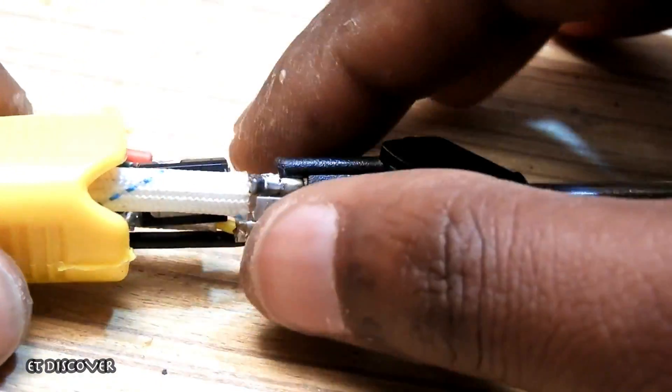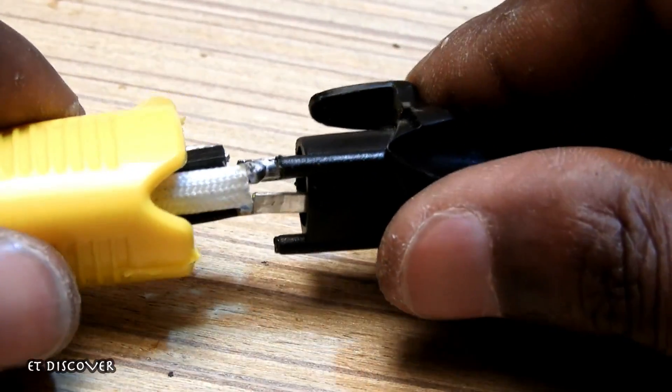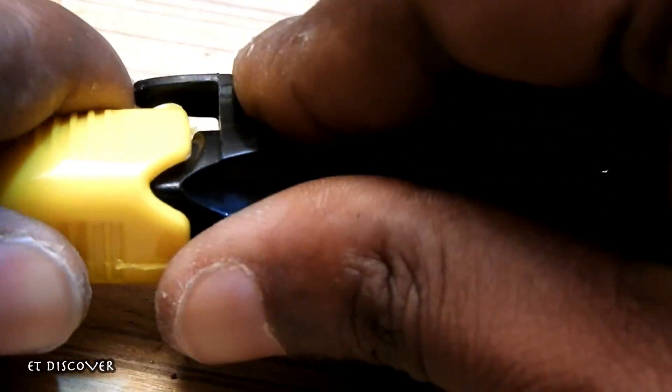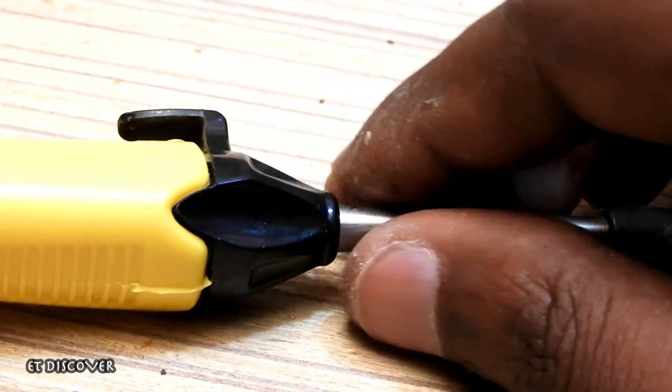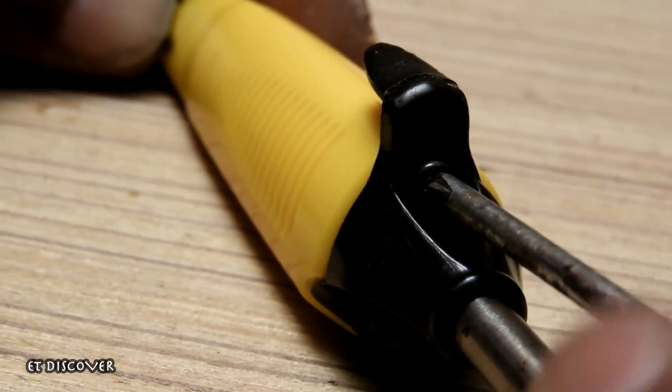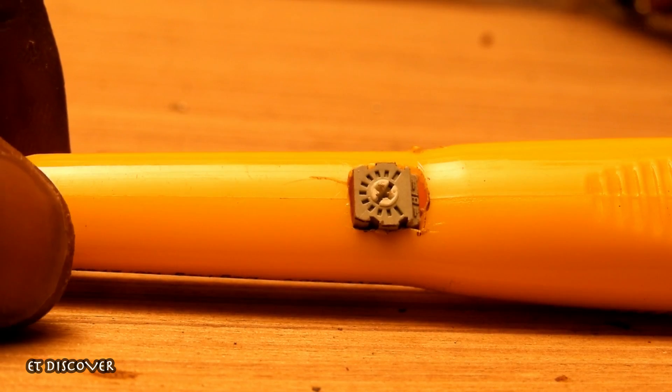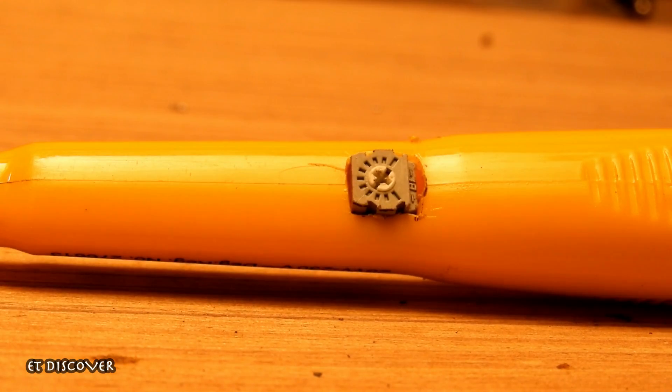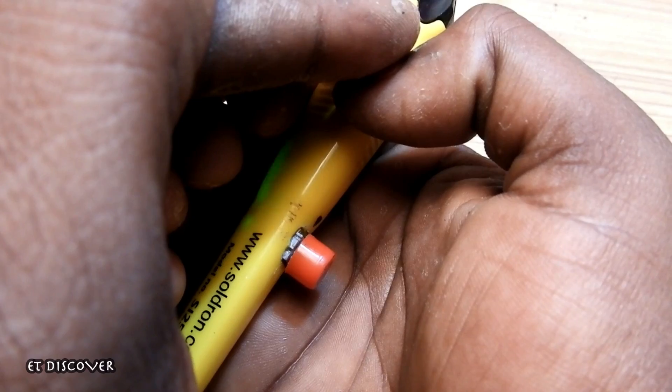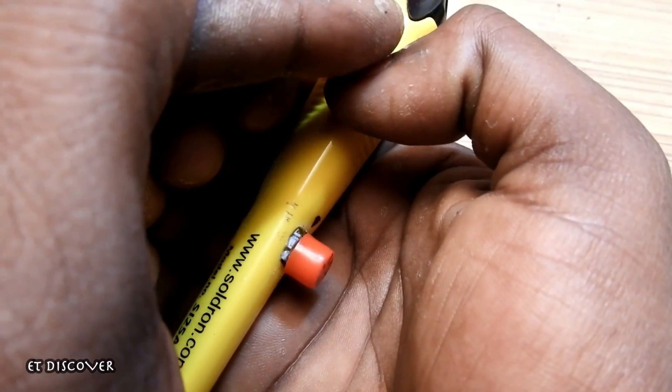So finally I put everything inside and screw up the cover of the soldering iron. And glued the preset with the body and glued a knob on the preset.